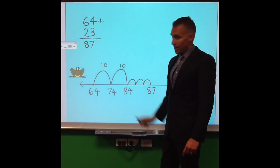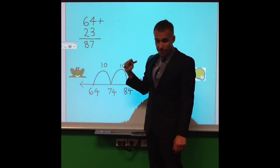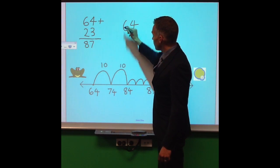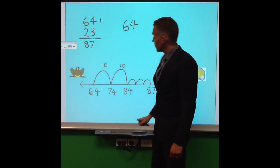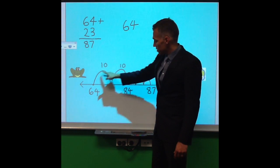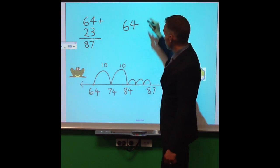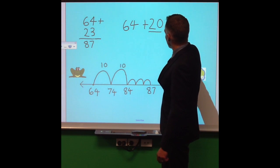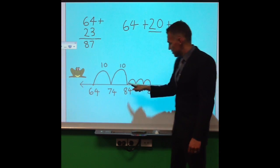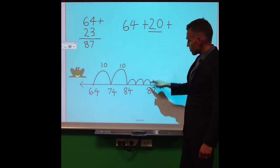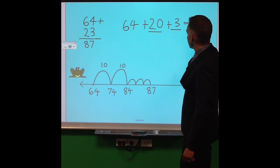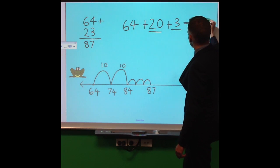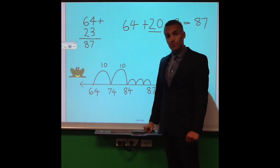So there it is on the number line. And the way we break the sum up is 64, where we started, plus 10, 20, plus 1, 2, 3 equals 87. Jump strategy.